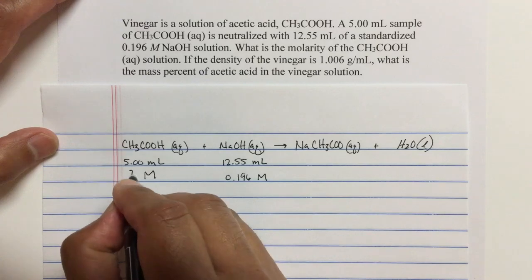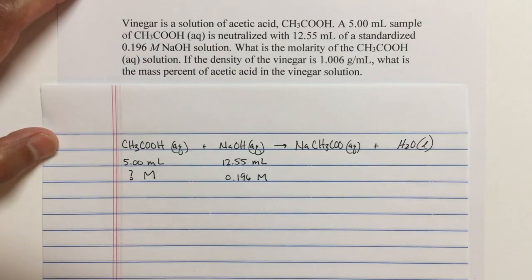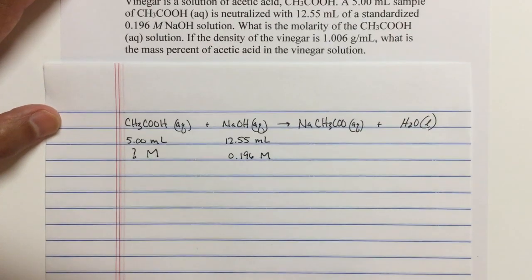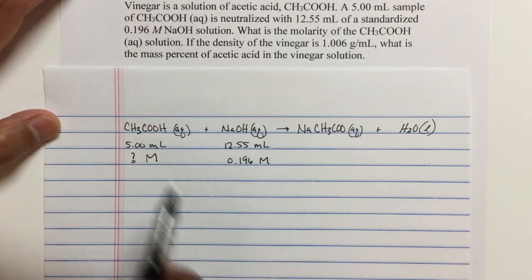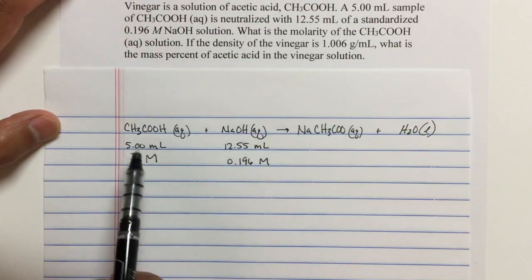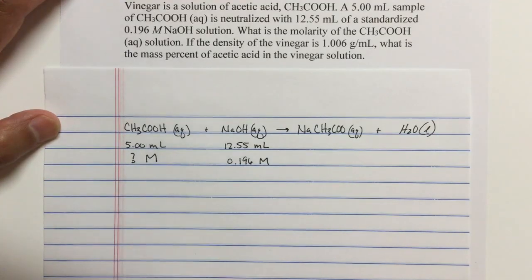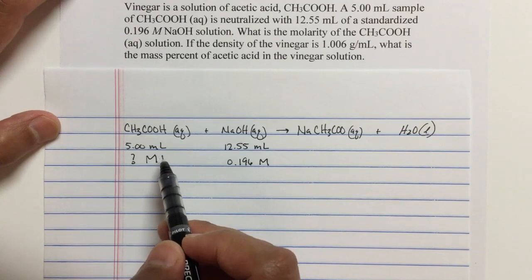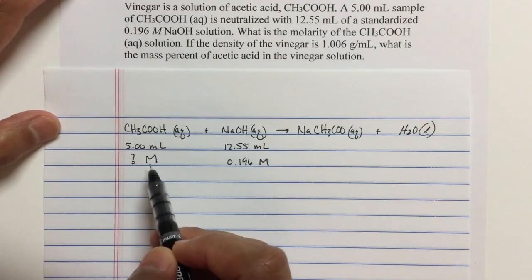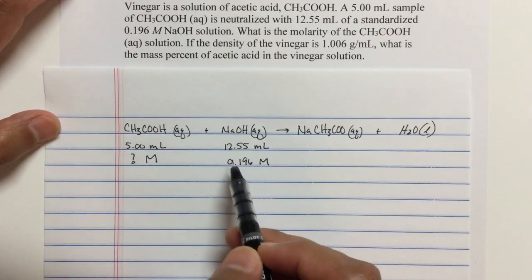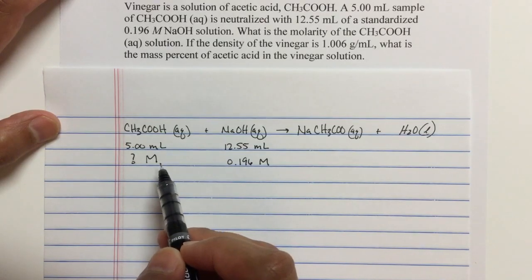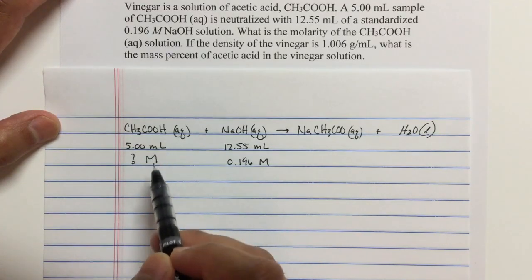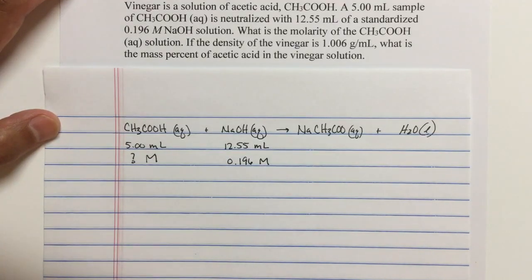And the goal is to find the molarity. So we're going to do some stoichiometry here. So we need the balanced equation, which we have. Here, the mole-to-mole ratio is all one-to-one. And we need to know the moles of acetic acid that react with the sodium hydroxide. If we can find the moles of acetic acid, we can divide by the volume, and that will give us our molarity.